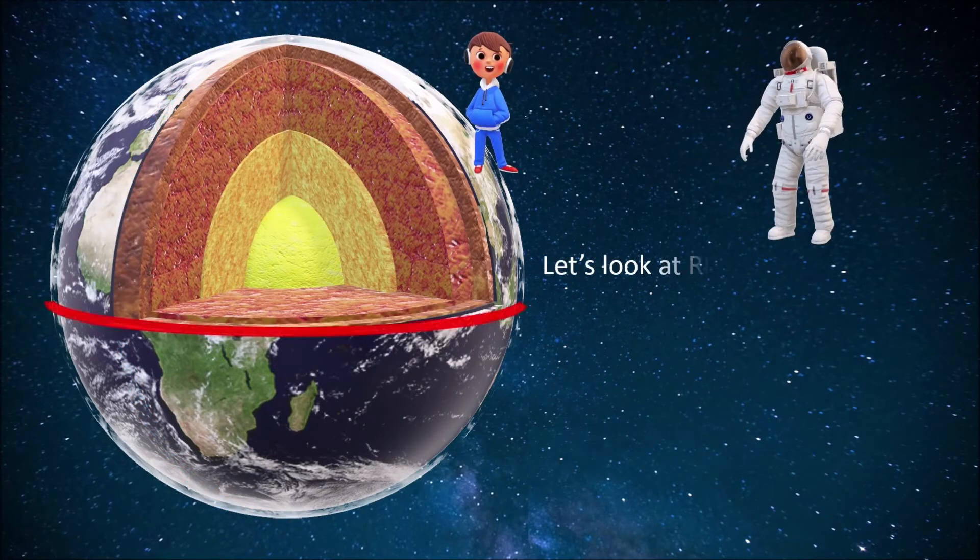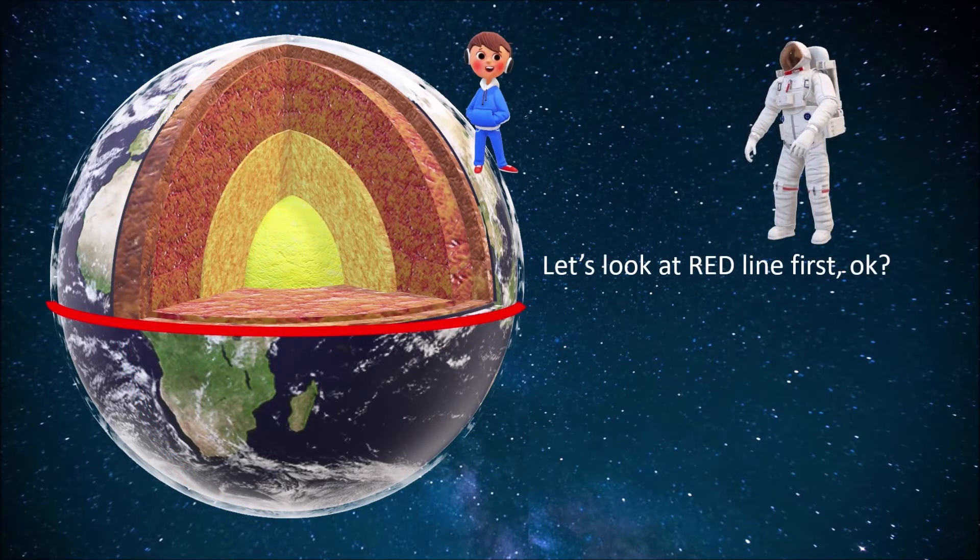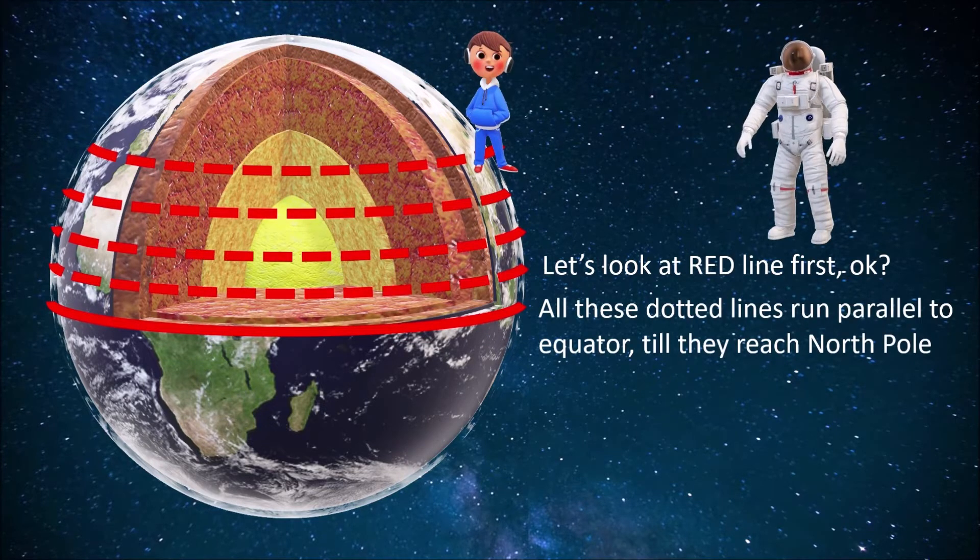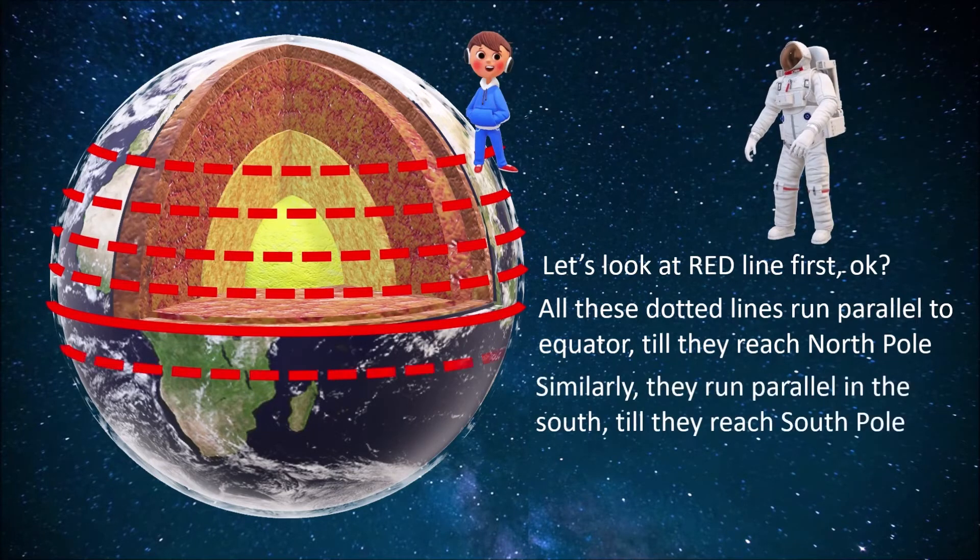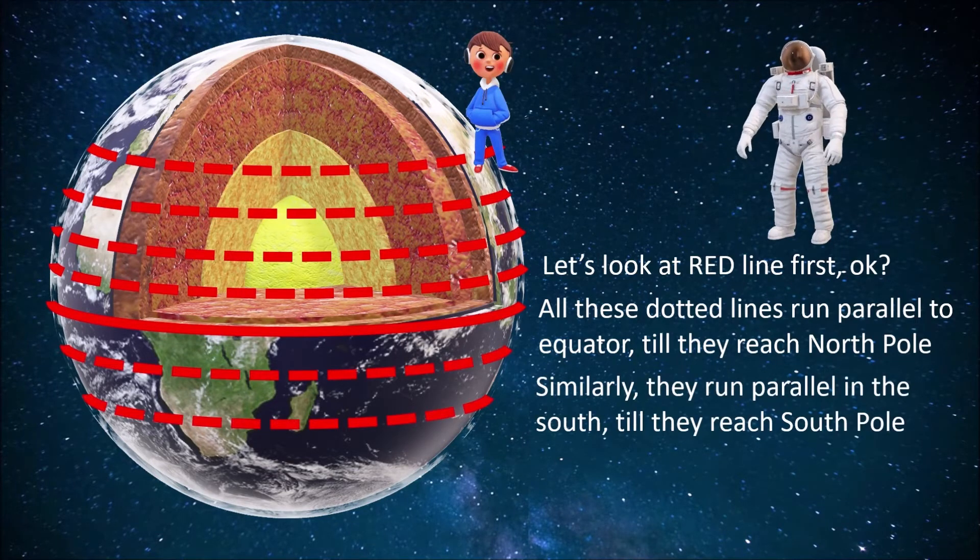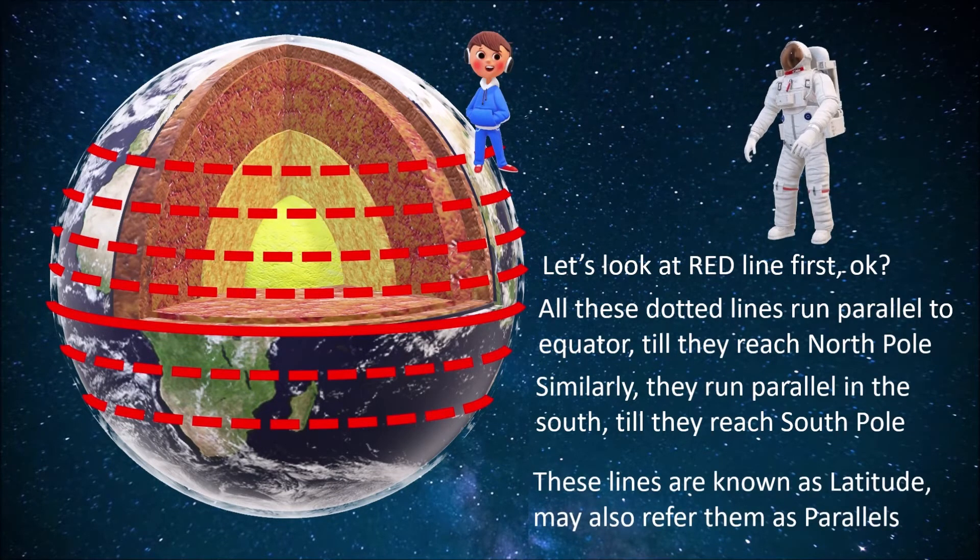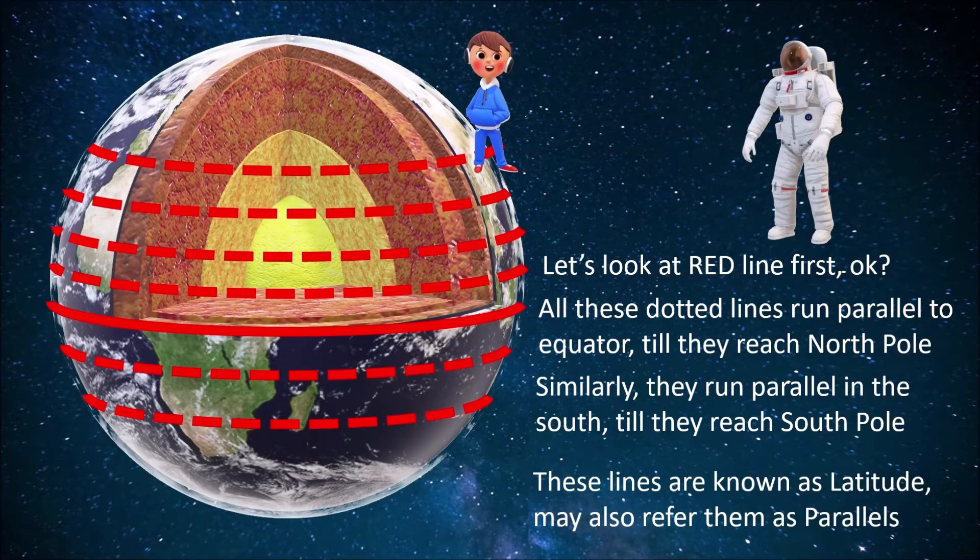Let's look at the red line first. All these dotted lines run parallel to the equator till they reach the north pole. Similarly, they run parallel in the south till they reach the south pole. These lines are known as latitude, may also refer them as parallels.